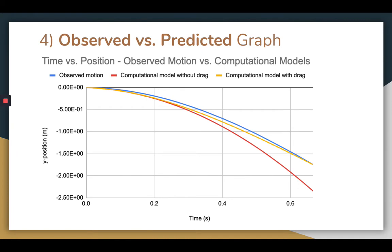Here's the graph incorporating the results of the observed motion and the two models. First, let's compare the observed motion to the computational model without drag. The computational model begins to deviate almost immediately from the observed motion of the box, over predicting the box's position in the negative direction for the entire time period. This can be explained in terms of the drag force, which is absent from this model. Since there is no force opposing the box's downward motion in this model, the box is predicted to travel further than it actually does in real life.